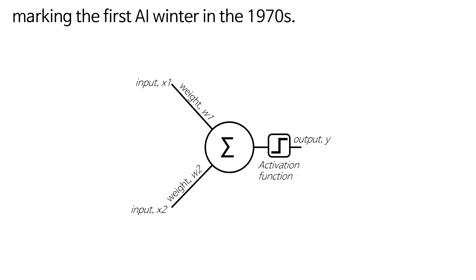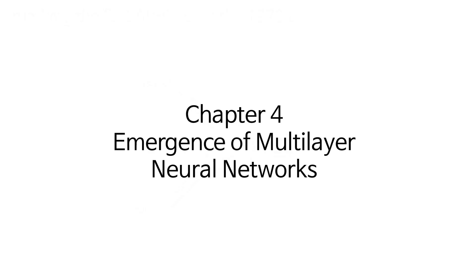This marked the first AI winter in the 1970s. Chapter 4: Emergence of Multilayer Neural Networks.